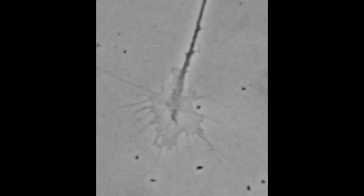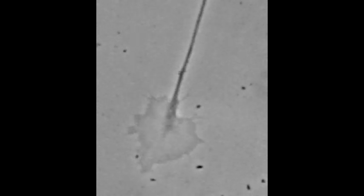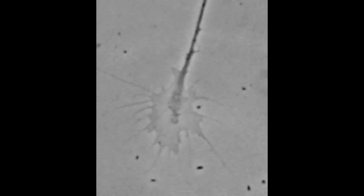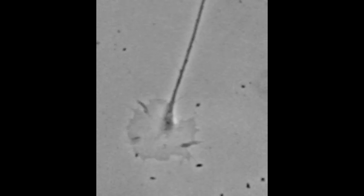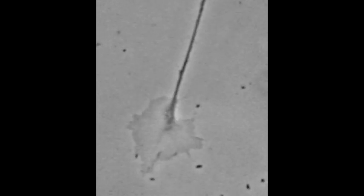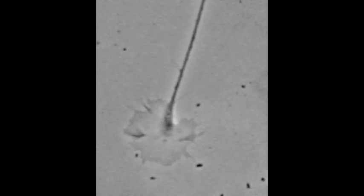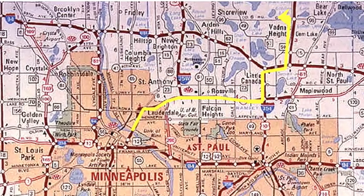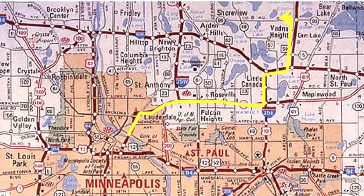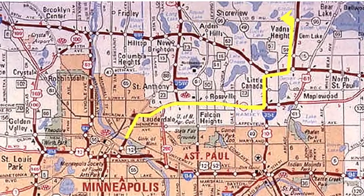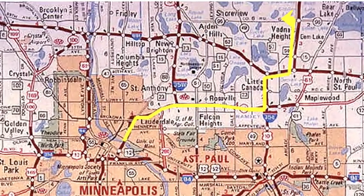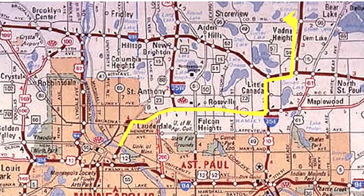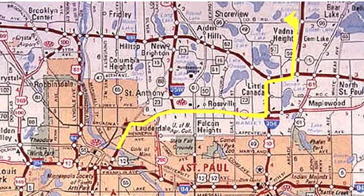Growth cones protrude finger-like filopodia and flattened lamellipodia that extend and search their surroundings for clues that mark the path to their targets. A growth cone's trip to its target is like a road trip — the growth cone must move through developing tissues and detect the roadways, signs, and exit ramps that lead to its destination.